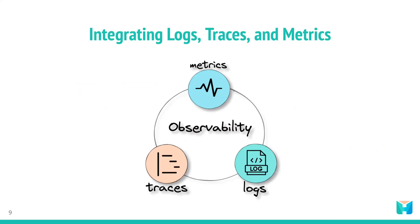Logs, traces, and metrics work together to provide developers with observability of their software systems, allowing them to diagnose issues and improve system performance. To illustrate how developers can use all three together to diagnose a problem and help fix it, let's walk through an example.